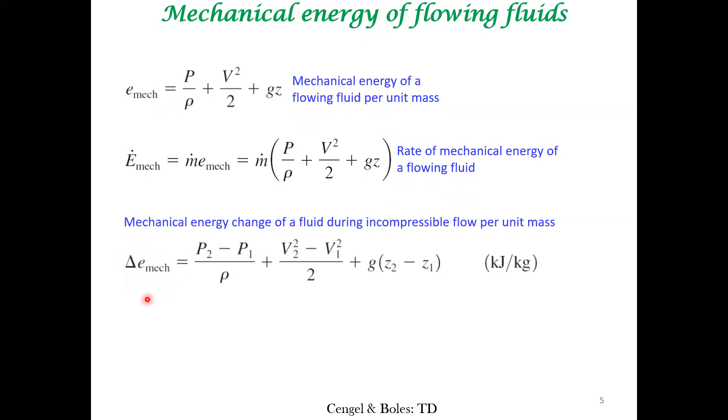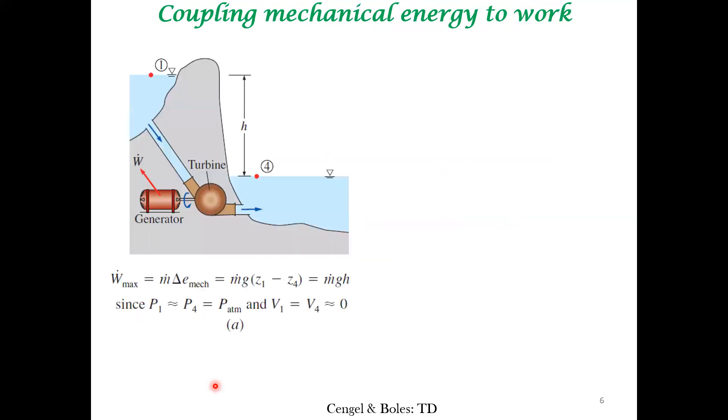We're interested in change in mechanical energy per unit mass. We consider two points for reference and look at the changes of these three components at two different points. This is the typical way we'll start energy bookkeeping that will help you analyze how much work you can obtain from energy processes. This can be converted into rate of mechanical energy change.